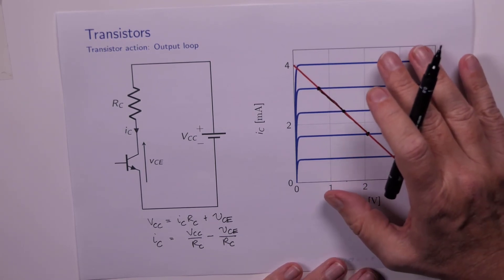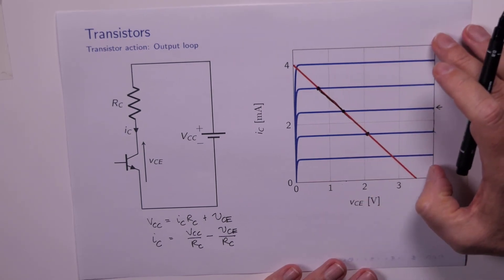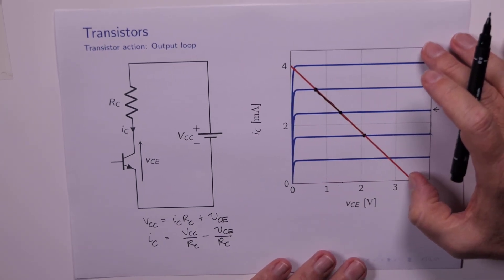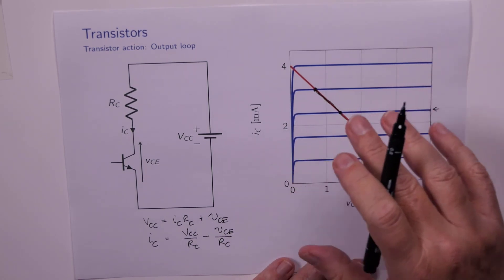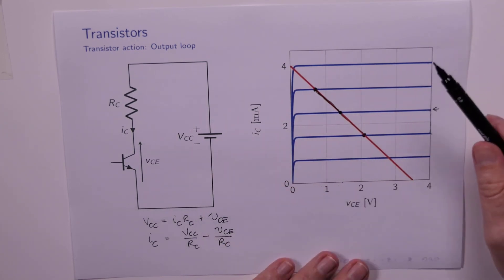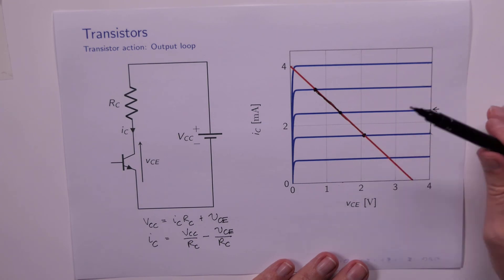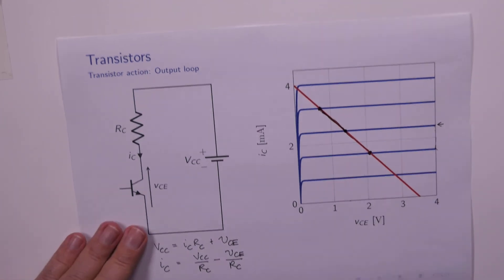Now later on, we're going to stop referring to these load lines, but they're important at the moment because they help us understand what's going on. Later on, we'll deal exclusively with mathematical models for the transistor, and we'll just have equations. But we can always come back to these diagrams to understand what's really happening. So they're very important.